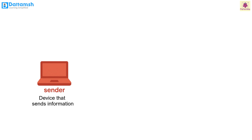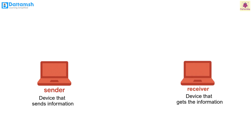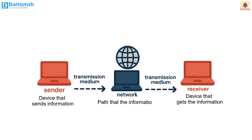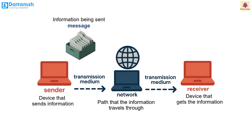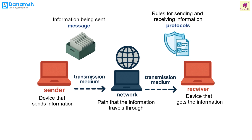The sender is the device that sends information. The receiver is the device that gets the information. The transmission medium is the path that the information travels through. The message is the information being sent. And protocols are the rules for sending and receiving information.